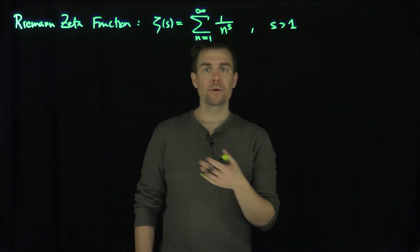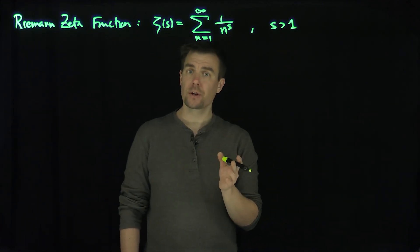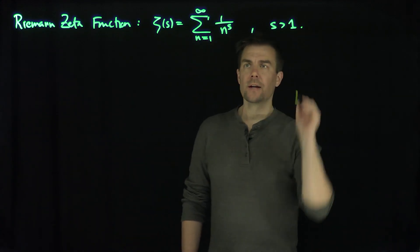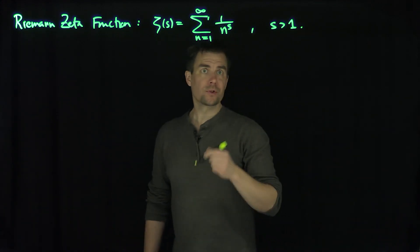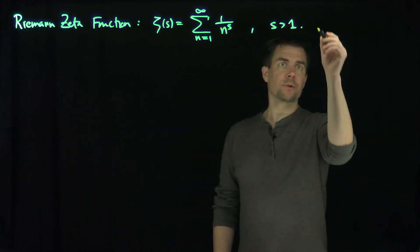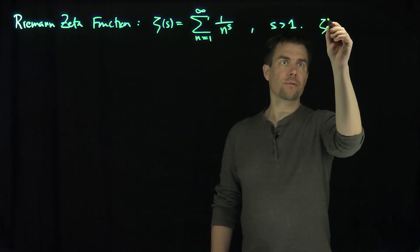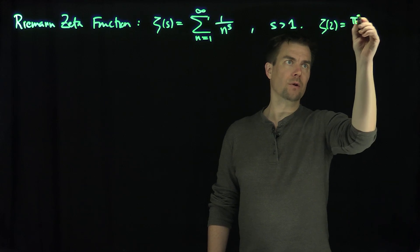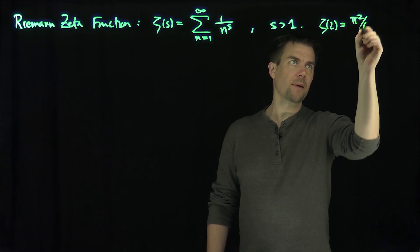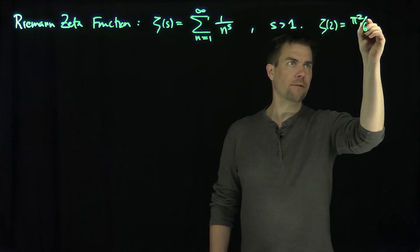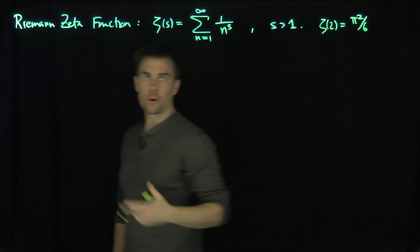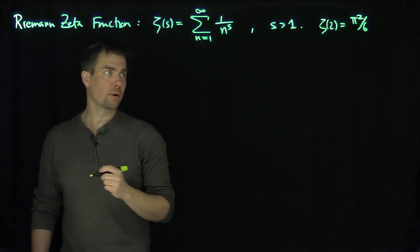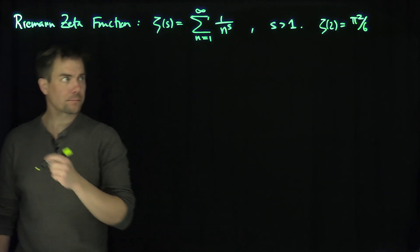We've already encountered this function in our study of Fourier analysis. We saw in previous videos that zeta of 2, for example, is pi squared over 6. And we're interested in finding other values of the zeta function and other properties of this Riemann zeta function.